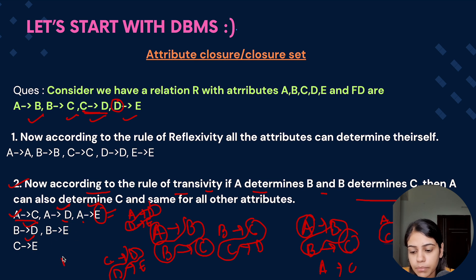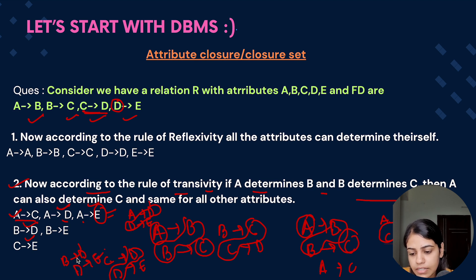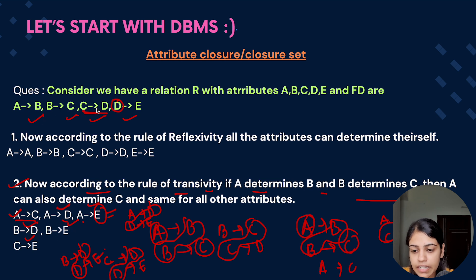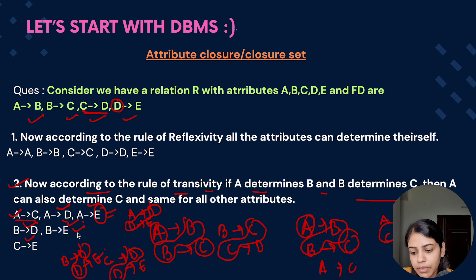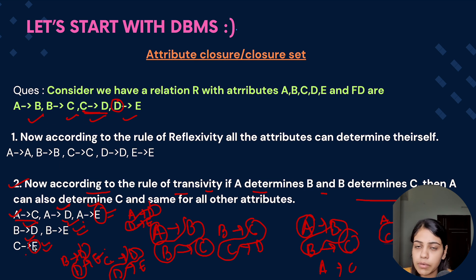Coming to C: C determines E, and since E doesn't determine any attributes, this is the only additional functional dependency for C. D determines E, and E determines nothing. So the derived dependencies are complete for all attributes.